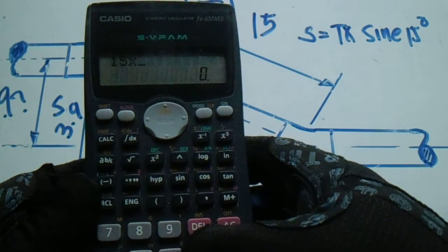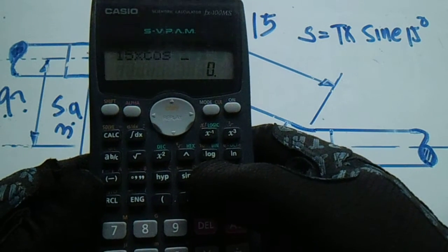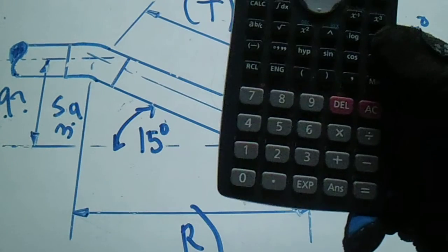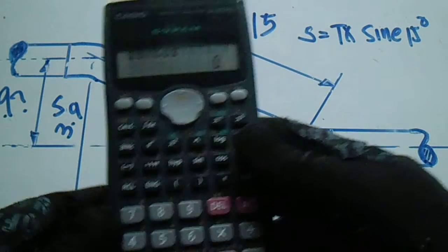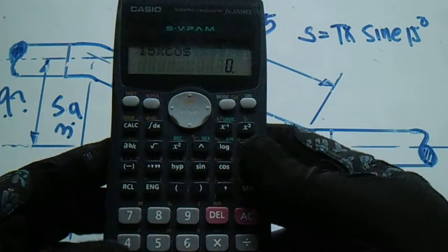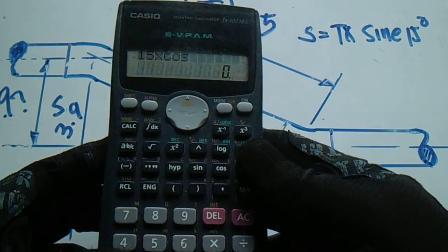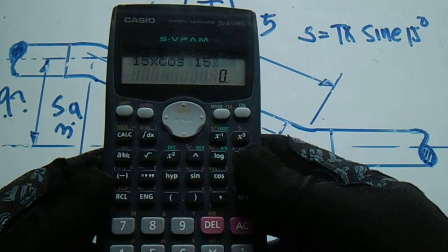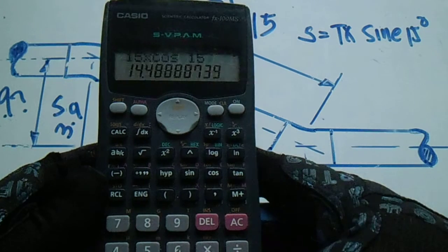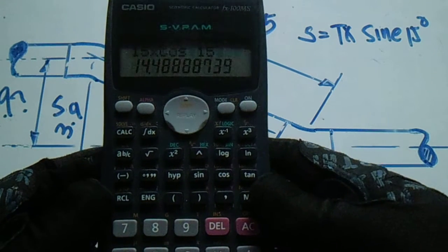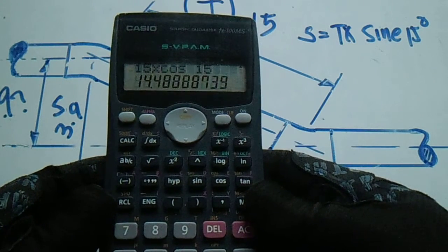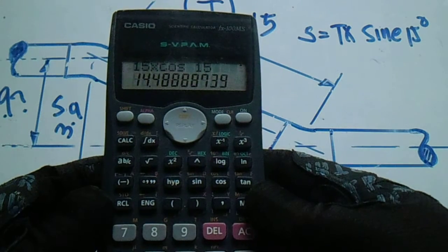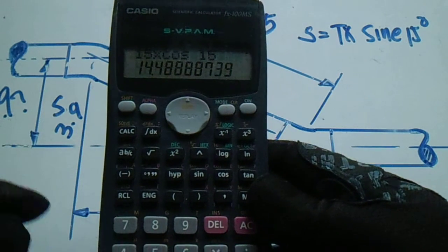So just make it cosine, so this is cosine to get run. So that's our answer is 14.4. So this is the answer for the run, this is 14.4.